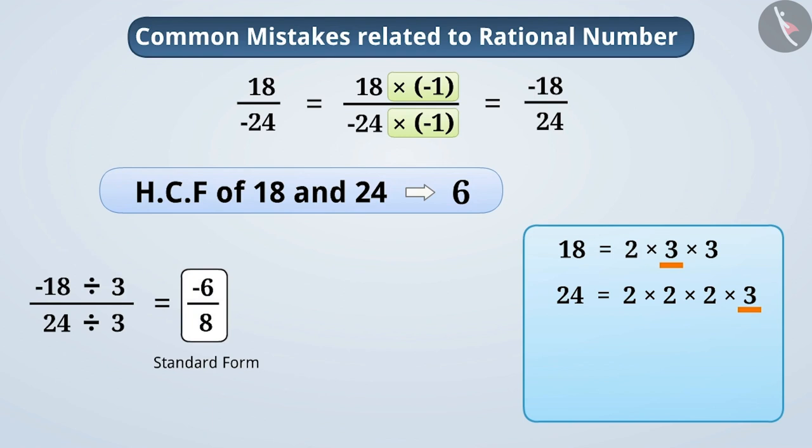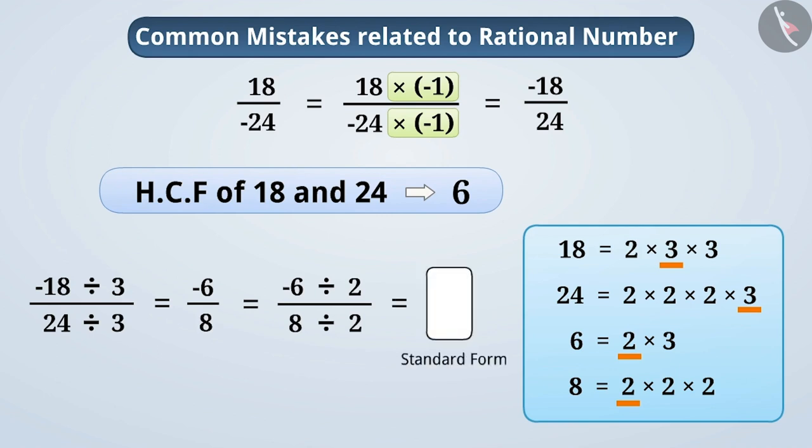They forget that they have to divide the numerator and the denominator by the common factors until they have no other common factor other than 1. As you can see, the common factor of 6 and 8 is 2. So we will divide both numerator 6 and denominator 8 by their common factor 2. This will give us the correct standard form of the rational number minus 3 by 4.